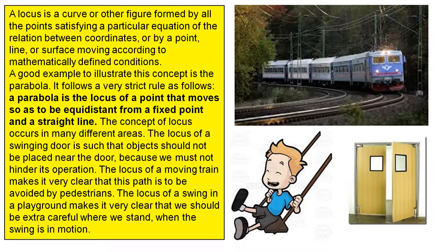The locus of a moving train makes it very clear that this path is to be avoided by pedestrians. The locus of a swing in a playground makes it very clear that we should be extra careful where we stand when the swing is in motion.